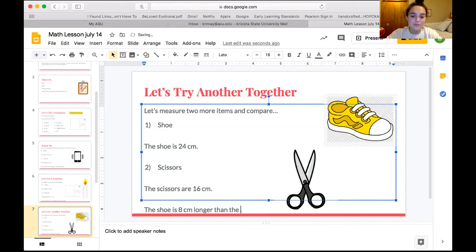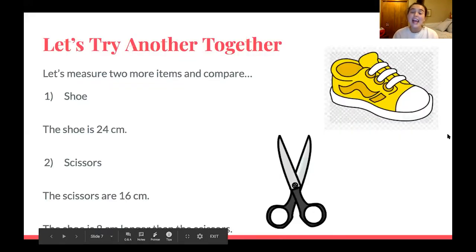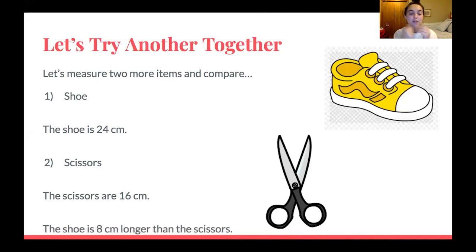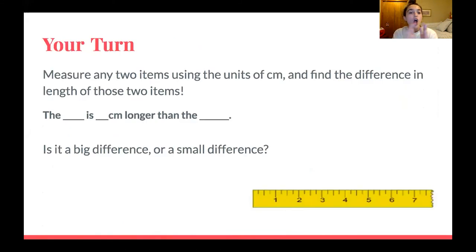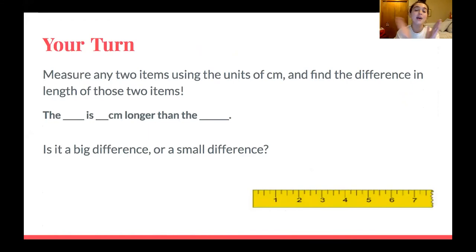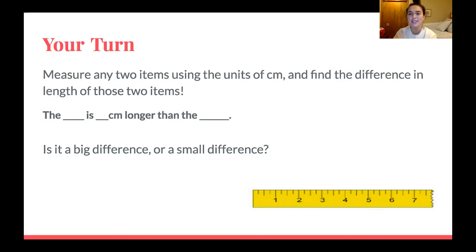I know you are doing the best you can even if your numbers are turning out differently — I hope you are at least following along with these steps. Now it is your turn! You guys can find any two items in your house that you think would be appropriate to measure in centimeters. A couple of ideas: pens, pencils, markers, a water bottle, something of that nature. Go ahead and find two items and fill out this sentence frame — which one is bigger, how much bigger — and tell me: is it a big difference or a small difference?